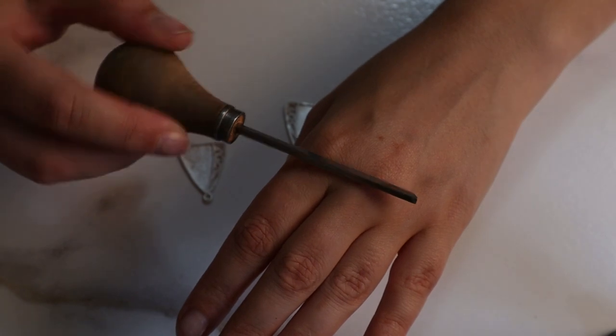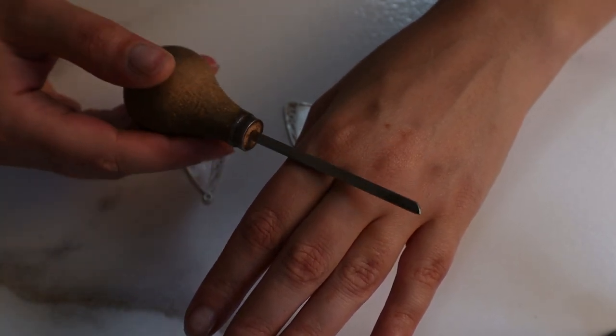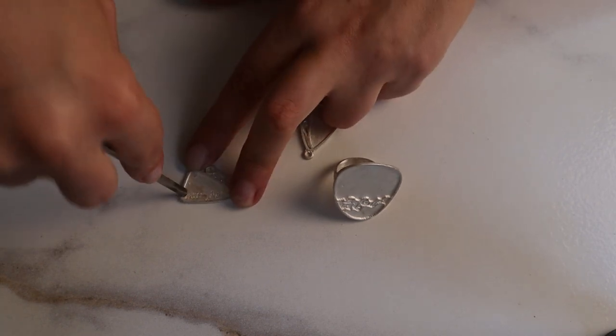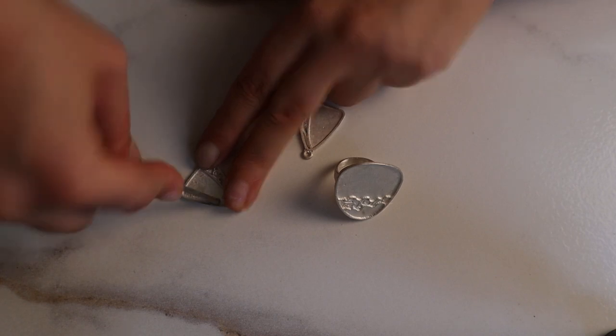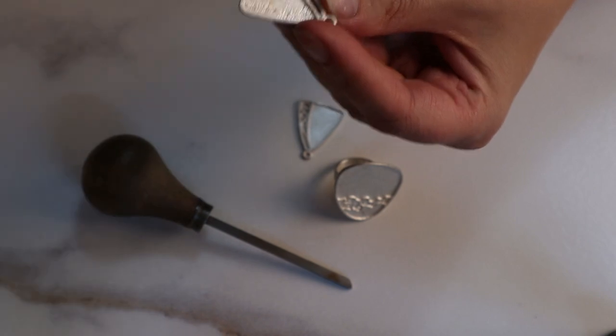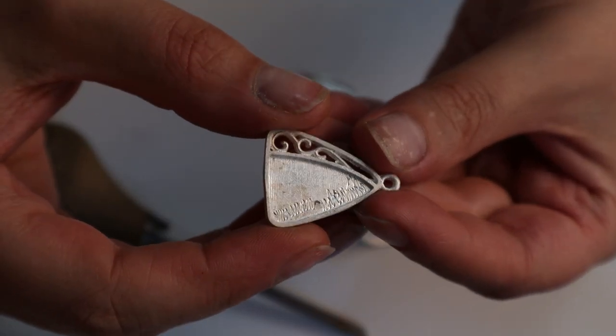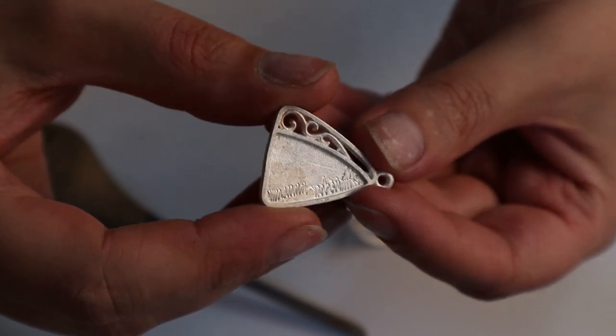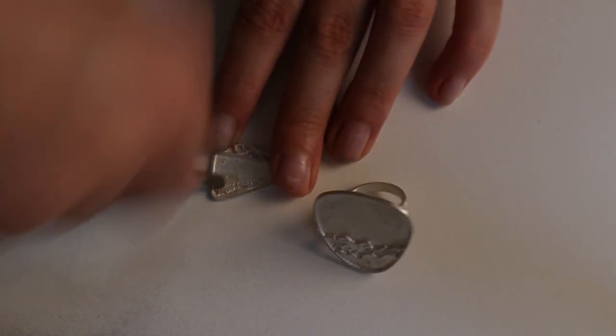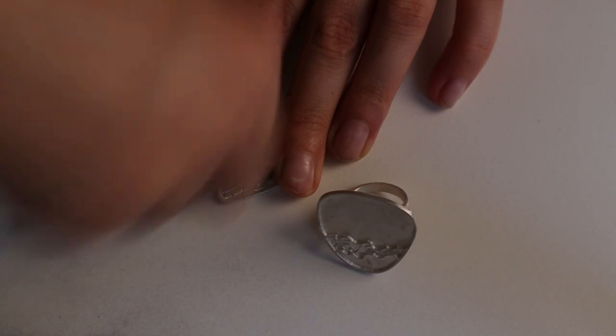This is the engraving tool I'm going to use. Maybe some of you will wonder why we're engraving the surface. I'm doing this because when you engrave and then work with enamelling, cloisonné enamel attaches very well and lasts longer when you engrave the surface of the form.